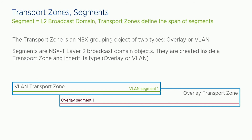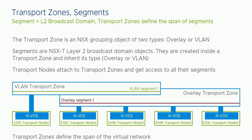Once you've created these objects, you'll use them when you install NSX on a host. When you create a transport node — a host running NSX — you have to attach it to at least one transport zone. The transport zone you attach the node to will dictate the kind of segments it can reach, and which segments the VMs running on that host can be attached to.